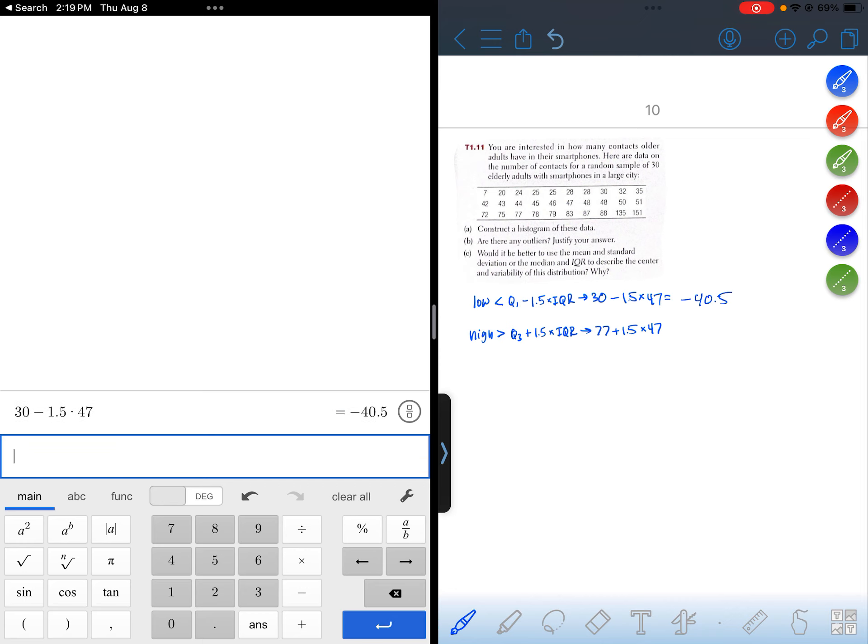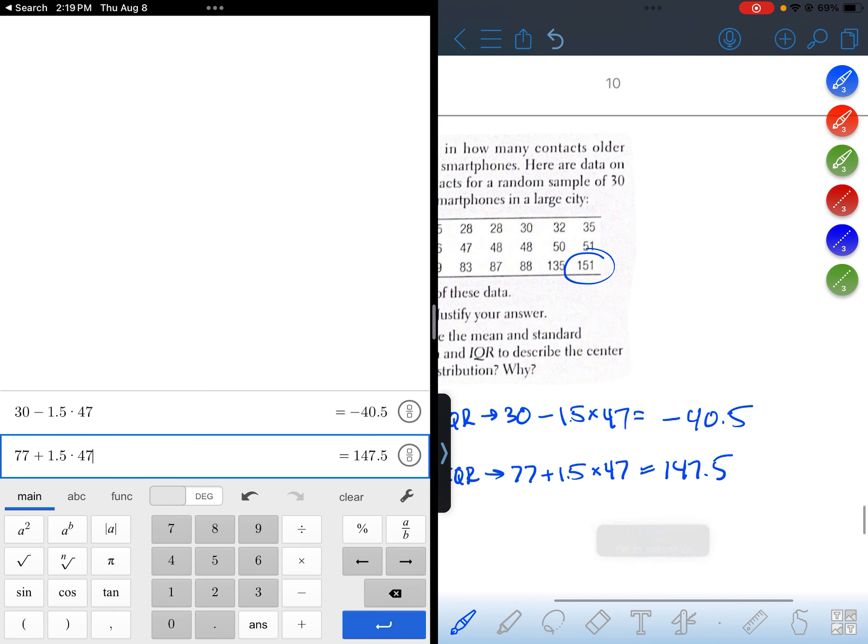Okay, high outliers are going to be anything that's greater than 77 plus 1.5 times 47, which is 147.5. So it looks like we do have at least one value that exceeds that boundary.